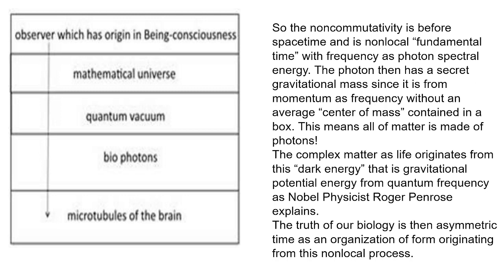The phase velocity — when you multiply the wavelength of the particle by the internal quantum frequency — is superluminal. It is the speed of light squared divided by the de Broglie wavelength. The de Broglie wavelength is Planck's constant times the speed of light divided by the momentum. This is the origin of quantum physics.